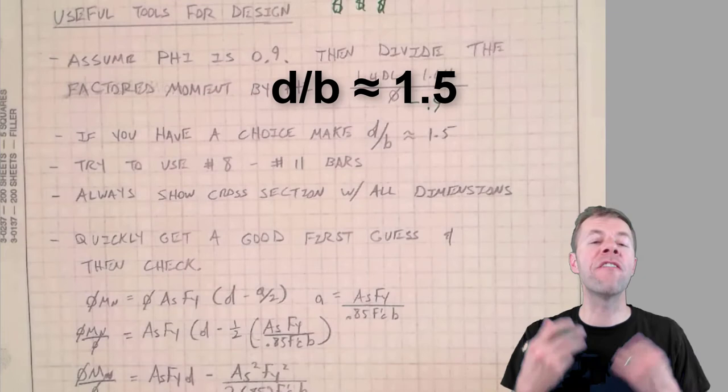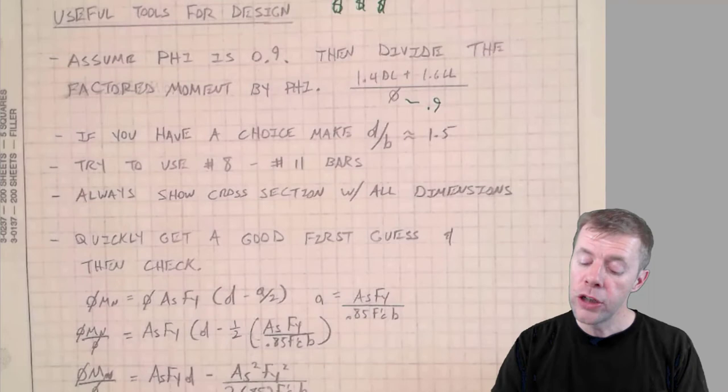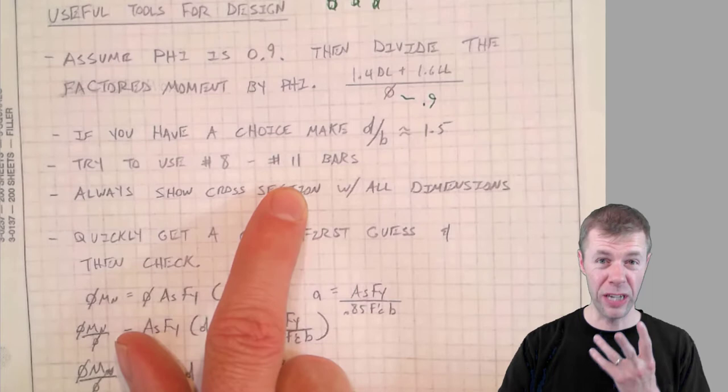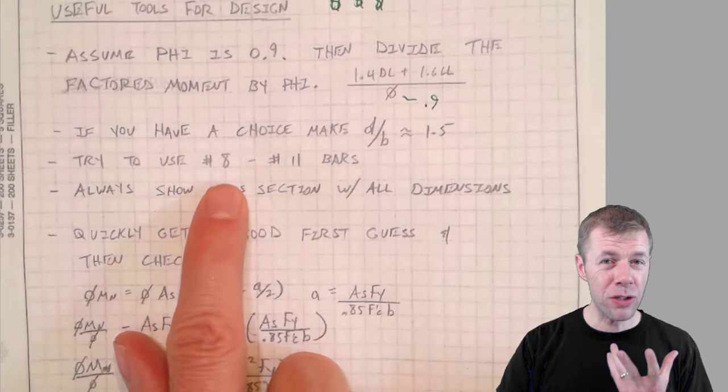Also, try to use number 8 to number 11 bars for your longitudinal steel. If you get too much bigger than a number 11, it's kind of hard to handle—it's hard to get the development length, which we'll talk about coming up. And if you get too much smaller than a number 8, it's not very economical.